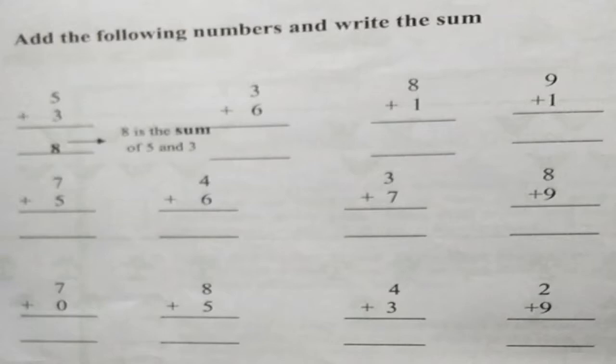Tell me how much is three plus six? Here, six is the bigger number. Let's keep six in our mind and three on our fingers, and count forwards. After six — seven, eight, nine. So let's write the answer: nine.